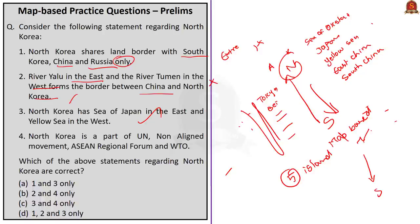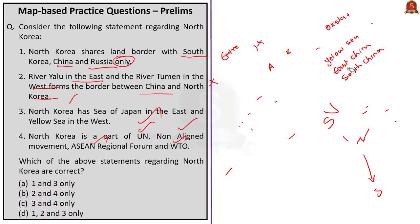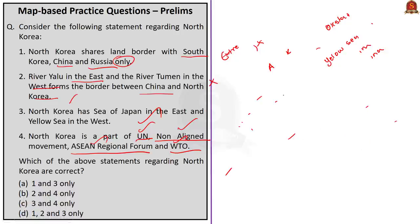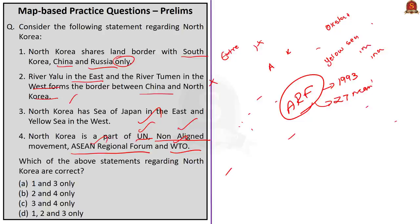Now let's move on to the fourth statement. It states that North Korea is a part of the UN, Non-Aligned Movement, ASEAN Regional Forum, and WTO. This statement is correct. The ASEAN Regional Forum, or ARF, was launched in 1993 as a 27-member multilateral grouping. It was initiated to facilitate cooperation on political and security issues, to contribute to regional confidence building and preventive diplomacy.